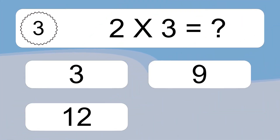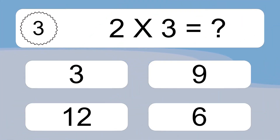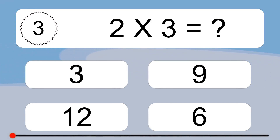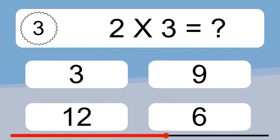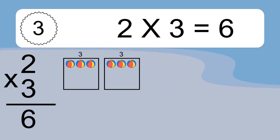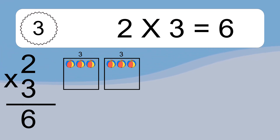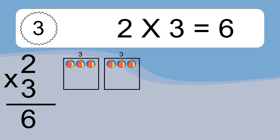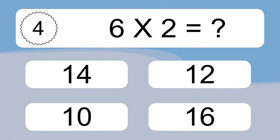2 times 3 equals what? 2 times 3 equals 6. We have 2 boxes and each box has 3 colorful balls inside. If you count all the balls in all the boxes together, you will have 2 times 3 balls. This equals 6 balls.